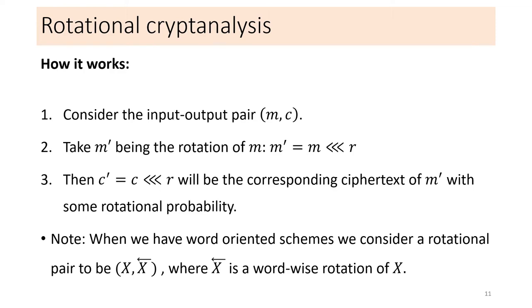So how does the attack work? The basic idea is to take a known input-output pair. Then a new pair derived by rotating both the input and the output will be accepted as valid with some probability depending on the rotational property. Note that in most schemes, we divide the state into equal blocks or also called words and apply operations on them separately. Then, as a rotation to the input, we consider a wordwise rotation, meaning that every word is rotated individually. We denote this with an arrow on top.